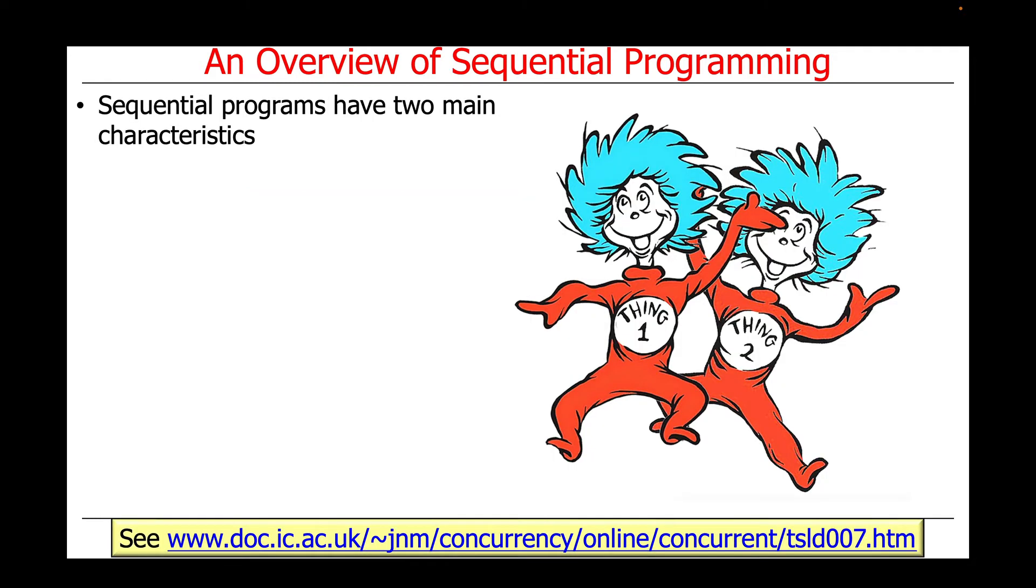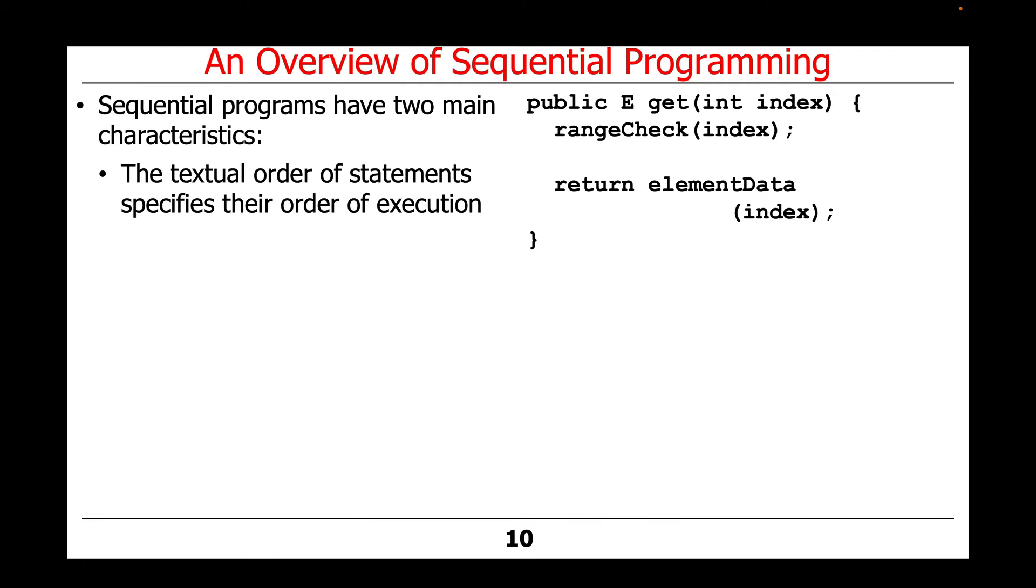Going back to sequential programs that are not random, they have two main characteristics. First, the textual order of their statements in the code specifies their order of execution.